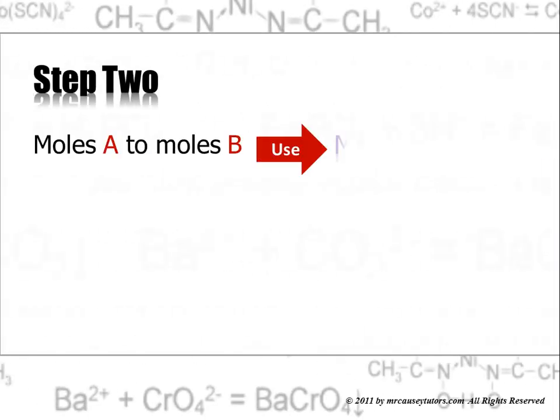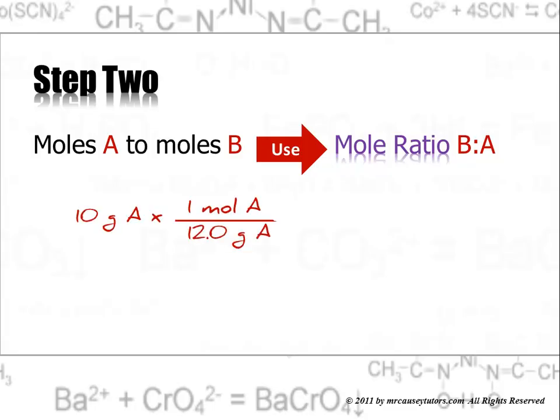Step two, you're going to take the moles of one substance and change it to the moles of the substance you're looking for. And you're going to use the mole ratio for that.